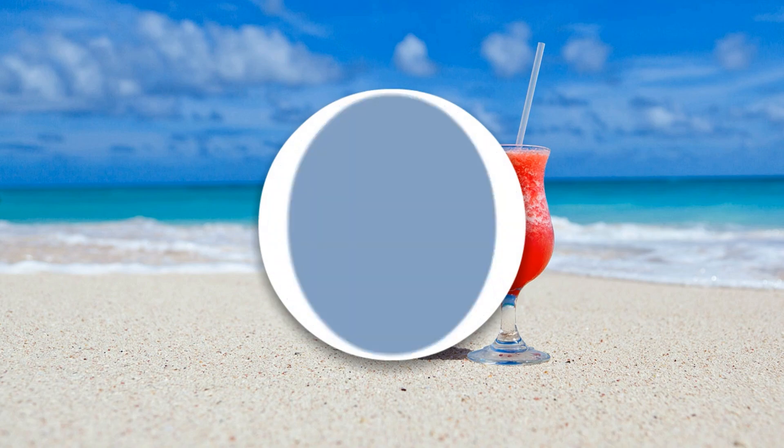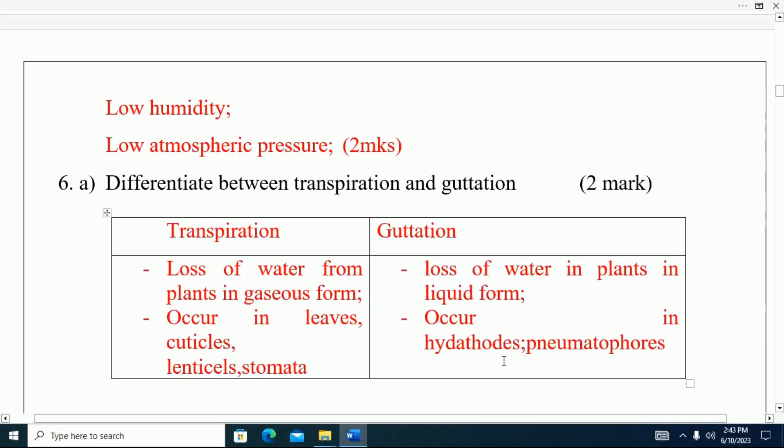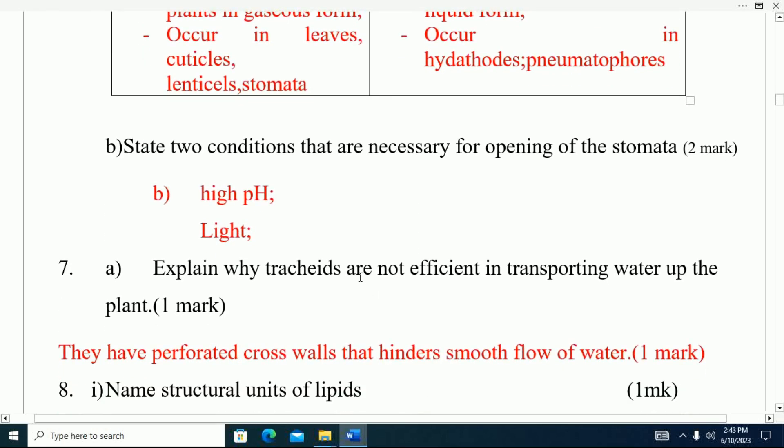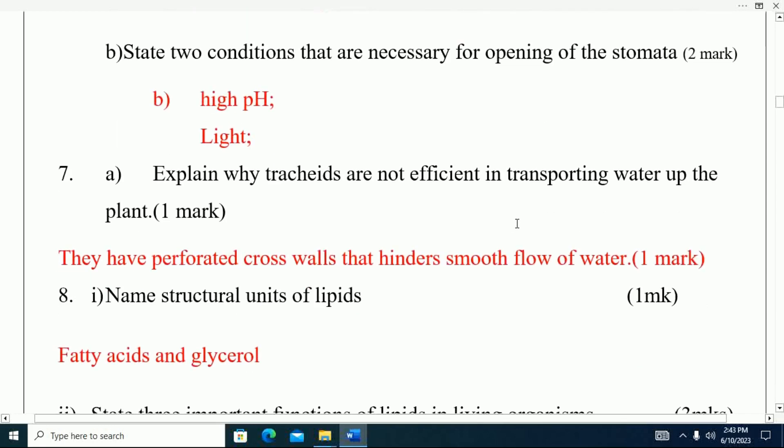Part B: State two conditions that are necessary for opening of the stomata. That one is high pH, number two is light.